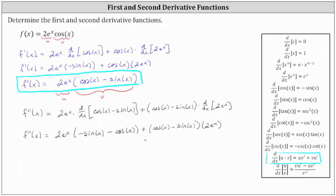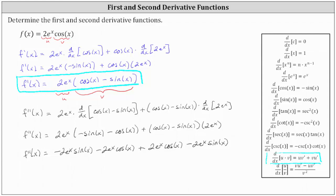Now let's go ahead and distribute and then simplify. f double prime of x is equal to negative two e to the x sine x minus two e to the x cosine x, and then plus two e to the x cosine x minus two e to the x sine x. Notice how two of these terms are opposites: negative two e to the x cosine x plus two e to the x cosine x simplifies to zero. The remaining two terms are like terms: negative two e to the x sine x minus two e to the x sine x is negative four e to the x sine x. Therefore, f double prime of x is equal to negative four e to the x sine x.